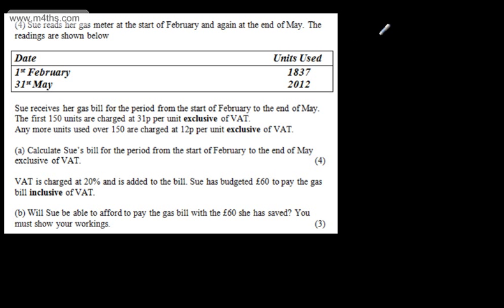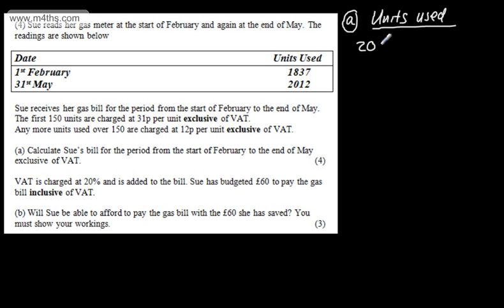Let's set this up — this is part A. The first thing I want to do is find the number of units used. It will be the difference between the two readings: 2012 minus 1837. We can do this on a calculator or mentally. That gives us 175 units — that is the amount Sue has used.